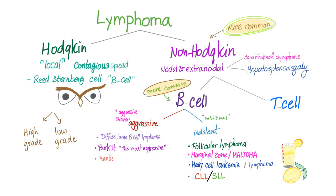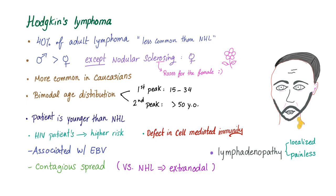Lymphoma is divided into Hodgkin's and non-Hodgkin's lymphoma. Hodgkin's is less common than non-Hodgkin's lymphoma. Hodgkin's is local — it spreads locally through contiguous spread. It has the Reed-Sternberg cell. Hodgkin's constitutes 40% of adult lymphoma, commoner in males, except the nodular sclerosing subtype which is common in females. More common in Caucasians, there is bimodal age distribution. Patients are usually younger than non-Hodgkin's lymphoma counterparts. HIV patients are at higher risk. There is a defect in cell-mediated immunity.